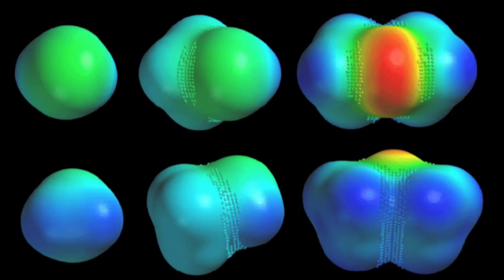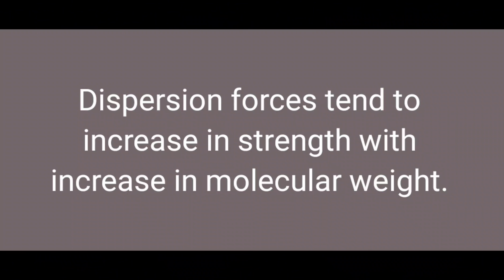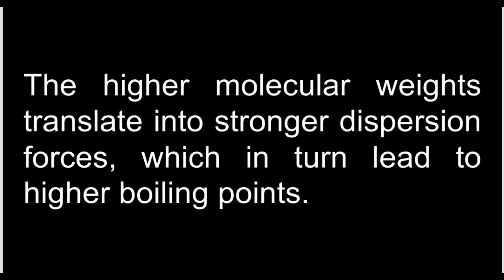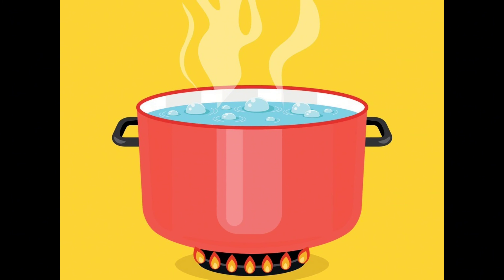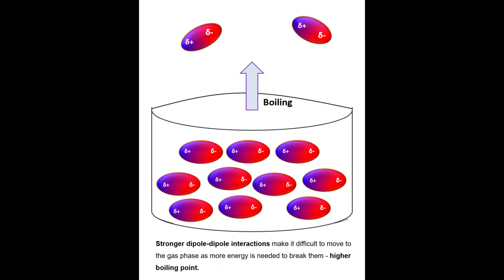Molecular size and mass are generally parallel to each other, so dispersion forces tend to increase in strength with increasing molecular weight. When we have a higher and larger molecular weight, we will have stronger dispersion forces. We can see this in the boiling points of the halogens and noble gases, where dispersion forces are the only intermolecular forces at work. A higher molecular weight means stronger dispersion forces and therefore a higher boiling point, because stronger interactions between molecules make them more difficult to separate.